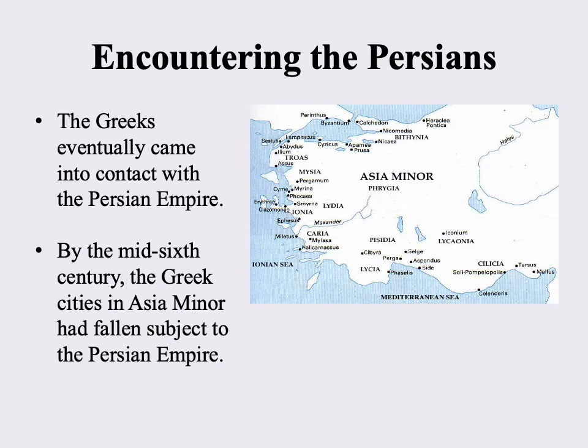Welcome to part two of our lecture on the ancient Greeks. In the first part we talked about political developments related to the birth of democracy, particularly in connection with Athens. From this point forward we're going to be looking at different conflicts involving the Greeks, and then looking at Alexander the Great and the creation of what's often referred to as the Hellenistic world. But the first conflict is going to be the first encounter the Greeks have with the Persians.